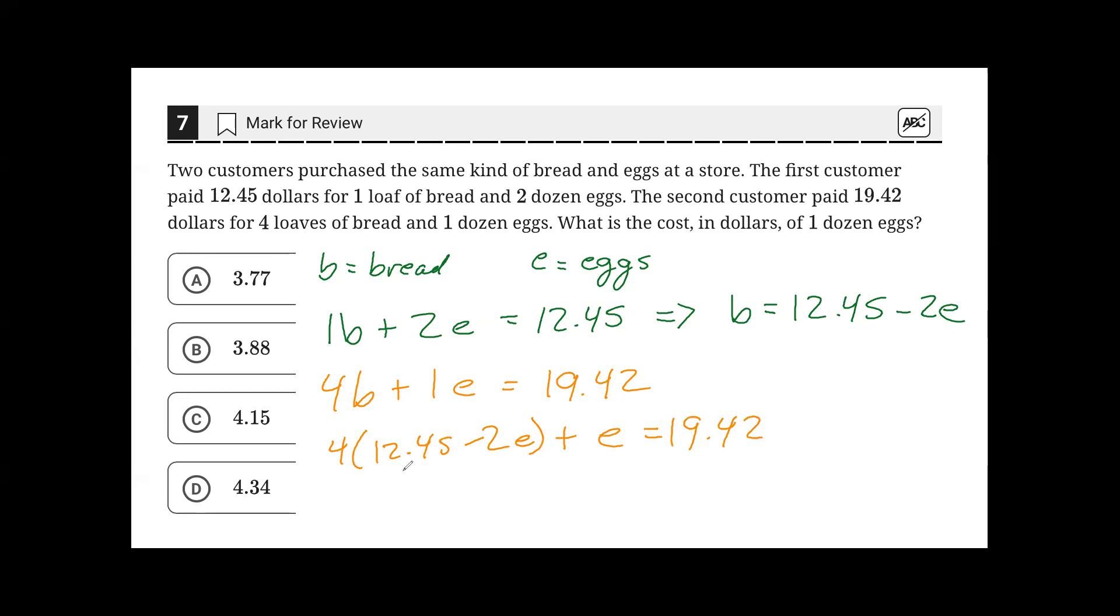Distributing the 4 gives us $49.8 minus 8E plus E equals $19.42.